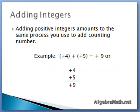Adding integers: Adding positive integers amounts to the same process you used to add counting numbers. So, for example, plus four added to plus five gives you plus nine. In the example that you see there, we wrote it across horizontally, or you can look at it vertically. Either way, you're going to come up with the same answer.